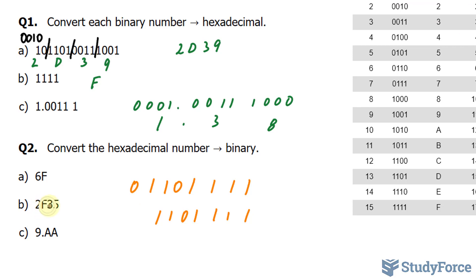The next number is 2F35. The 5 is 1010, the 3 is 1100, and the 2 is 01. You don't need to write those leading 0s. So this is our answer for part B, and that was our answer for part A.